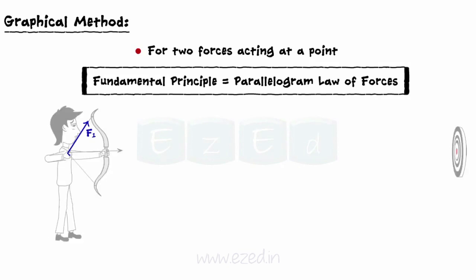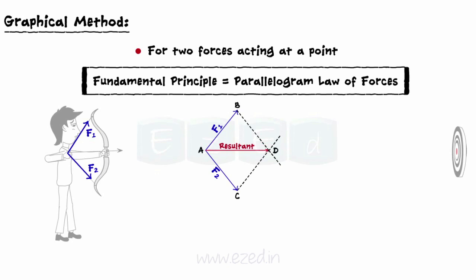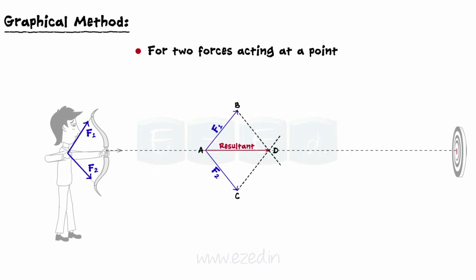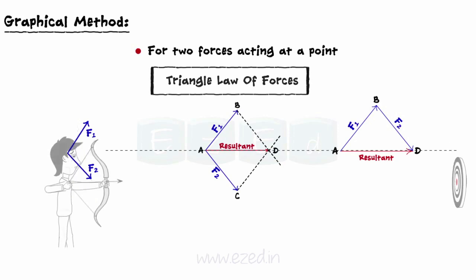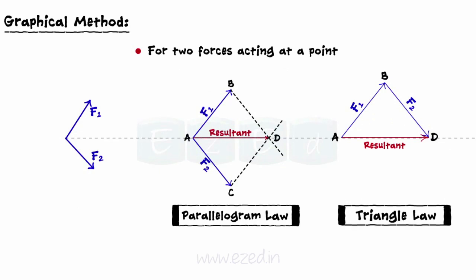The fundamental principle of finding the resultant of two forces is the parallelogram law of forces. According to this law, if F1 and F2 are the two forces acting on a body, the resultant force can be obtained by constructing a parallelogram ABCD, in which the sides AB and AC represent the forces F1 and F2 in magnitude and direction. Then, the diagonal AD represents the resultant R in magnitude and direction. The same result can be obtained by using the triangle law of forces via constructing triangle ABD instead of parallelogram ABCD. Line AB represents force F1 and BD represents F2. The closing line AD of triangle ABD represents the resultant force in magnitude, line of action, and direction. Thus, we can use both parallelogram law and triangle law of forces to find the resultant of a concurrent force system of two forces.